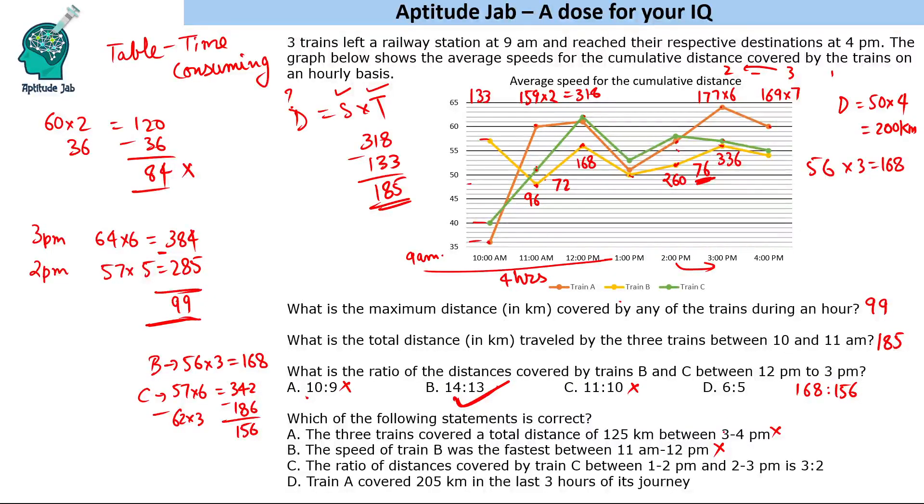Another option is train A covered 205 kilometers. Let's check this - train A covered 205 kilometers in last 3 hours of journey. So last is 7 hours and at 7 hours it is 60 into 7. At 4 hours it was at 51 into 4. The last digit is 0, the last digit is 4, the answer should be 6, so this cannot be the answer. So this has to be the answer.